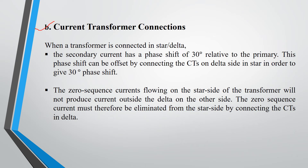The second consideration is current transformer connections. Taking transformer connections in star-delta — that is, the primary winding connected in star and secondary winding connected in delta — the secondary current will have a phase shift of 30 degrees relative to the primary current, and this phase shift needs to be taken care of. Otherwise, the CTs connected on both sides of the transformer will respond in a different manner. Thus, the CTs on the delta side are connected in star to compensate for that 30-degree phase shift.